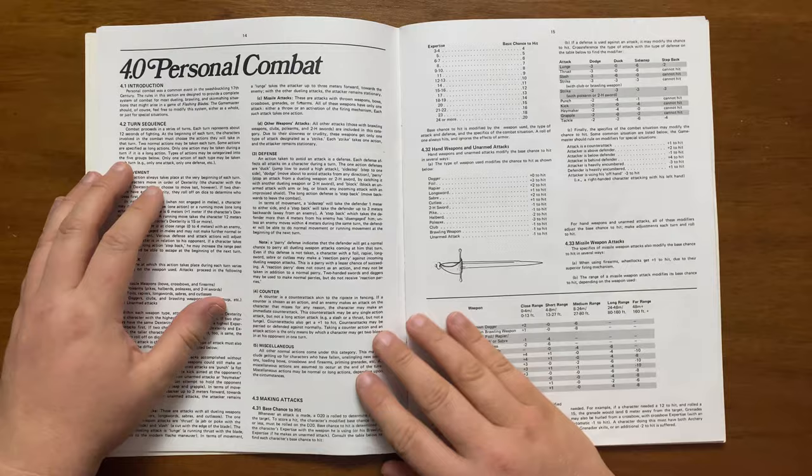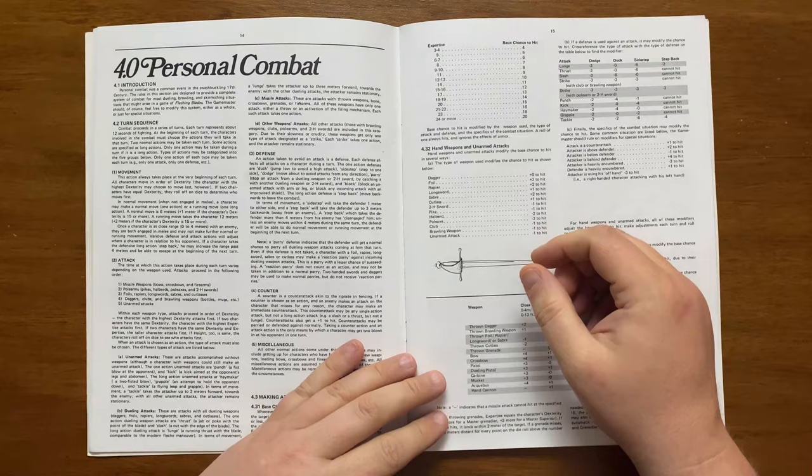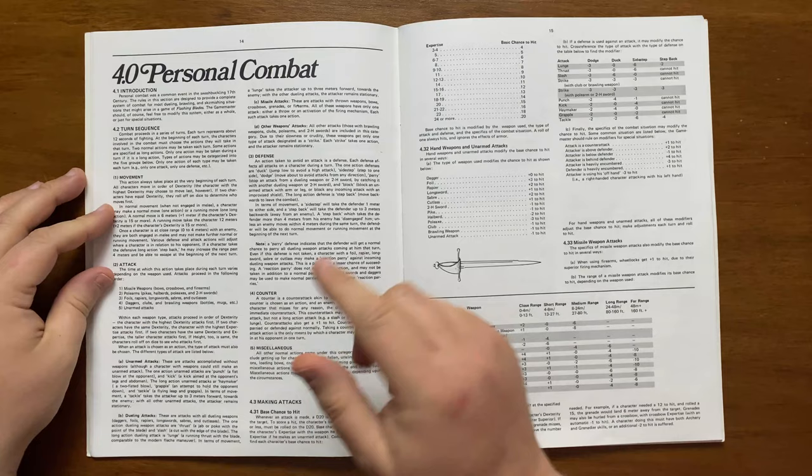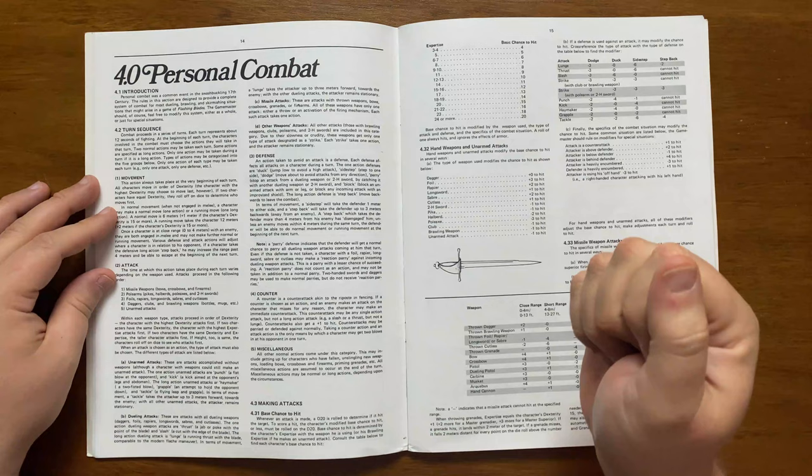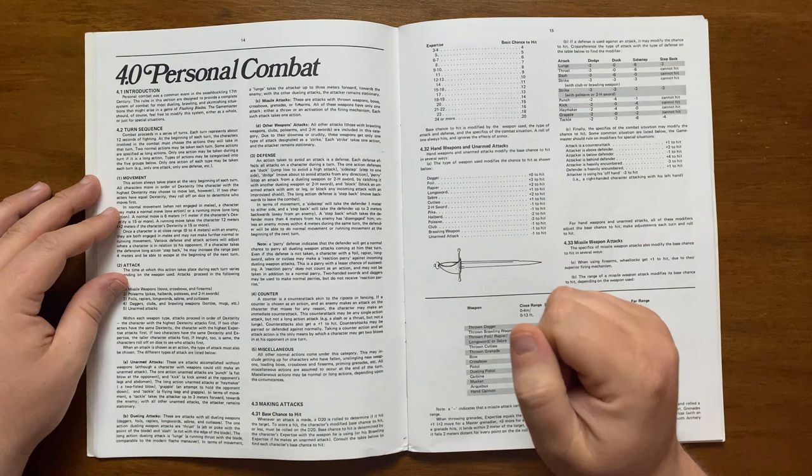After this is personal combat. As you would imagine with a game called Flashing Blades, combat plays a large part in the game. A turn of fighting represents about 12 seconds, and at the start of the turn characters choose their actions. There are 5 types of action: Movement, which is done at the beginning of the round; Attack, which are done in the order of missile weapons first, pole arms next, fencing weapons third, daggers and the like fourth and unarmed attacks last.